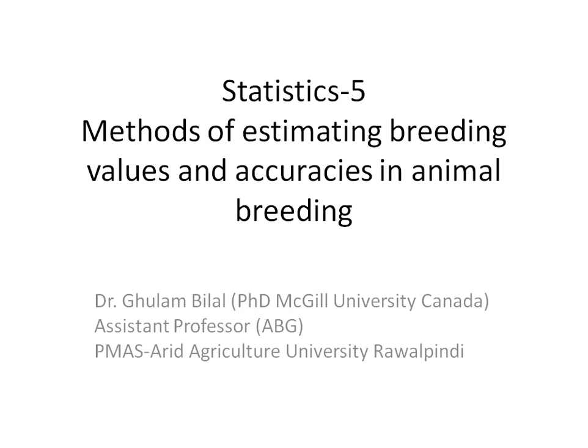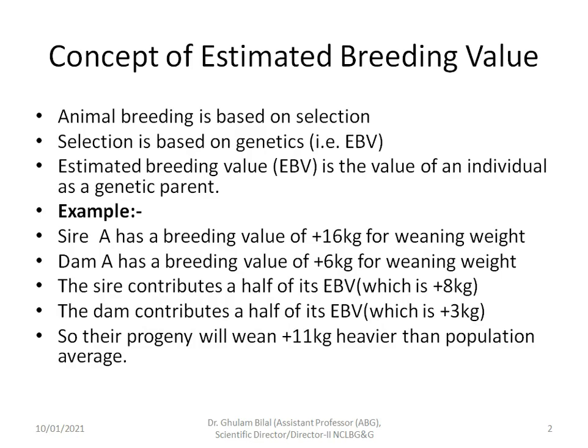Bismillahirrahmanirrahim. My dear students and audience, in this video we will study various methods of estimating breeding values and their accuracies in animal breeding. Animal breeding is based on selection, and selection is based on genetics, which is typically represented by EBV — Estimated Breeding Values.